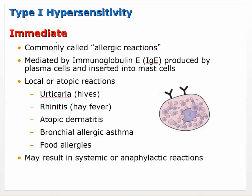Type 1 is the immediate hypersensitivity, commonly called an allergic reaction. On an exam, if it's happening right away, it's probably type 1. It's mediated by immunoglobulin E (IgE).